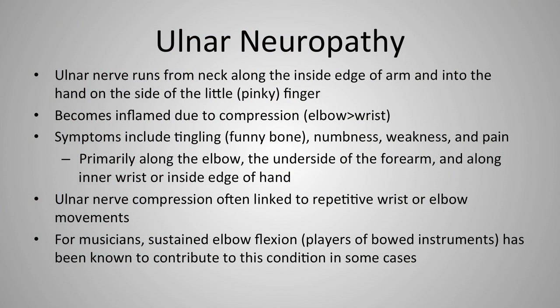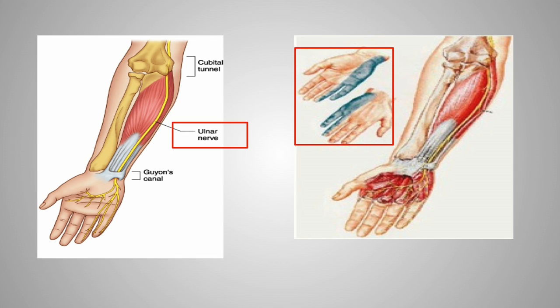Ulnar neuropathy is due to ulnar nerve compression. That nerve runs from the neck along the inside edge of the arm into the hand on the side of the pinky, and can become inflamed due to compression most often at the elbow, but sometimes at the wrist. Symptoms include tingling — like hitting your funny bone — numbness, weakness, and pain. Ulnar nerve compression is often linked to repetitive wrist or elbow movements; for musicians, sustained elbow flexion during instrument playing has been known to contribute. Sensory symptoms typically involve the pinky and part of the ring finger.